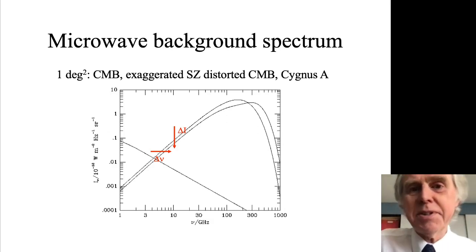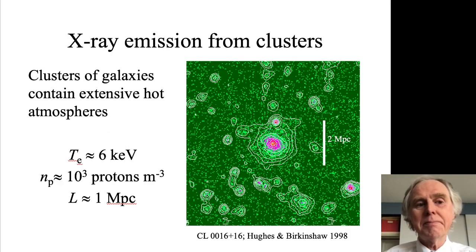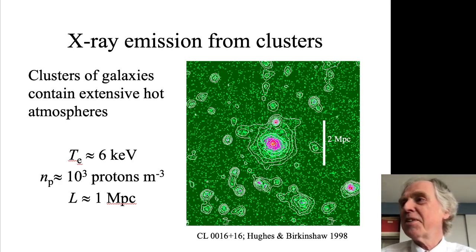Let's estimate the size of these SZ effects. If you look at clusters of galaxies in the astrophysical literature over the last 30 or 40 years, you'll find that much of the discussion has been about their X-ray emission. Clusters of galaxies are assemblages of thousands of galaxies into one gravitational potential well. That gravitational potential well is therefore very deep, and the clusters can hold a very large, very hot gas atmosphere.